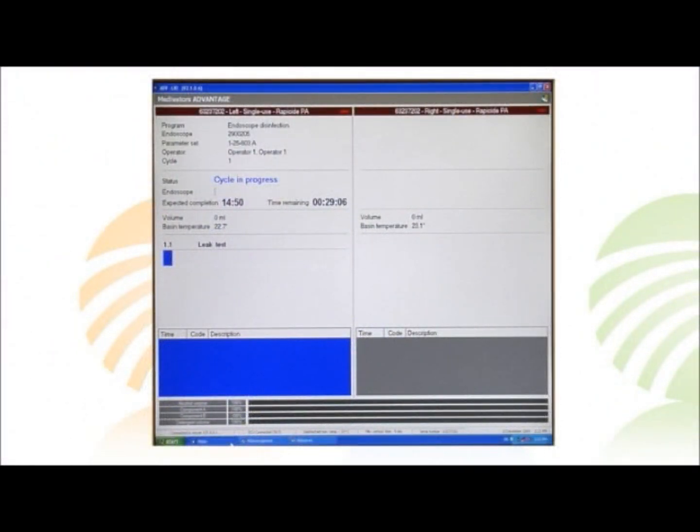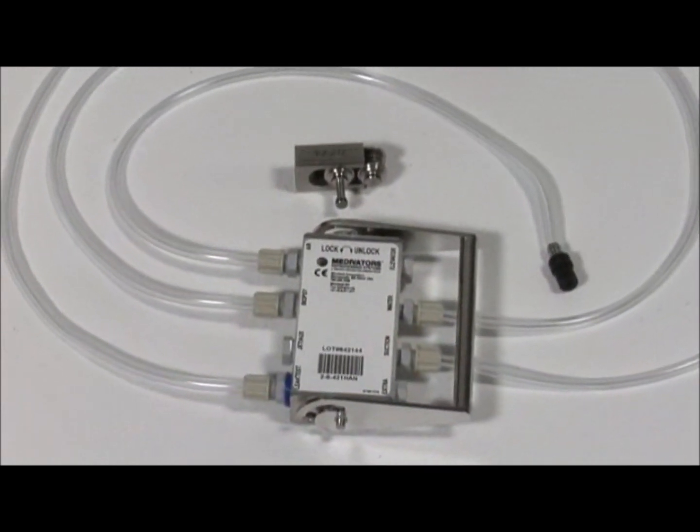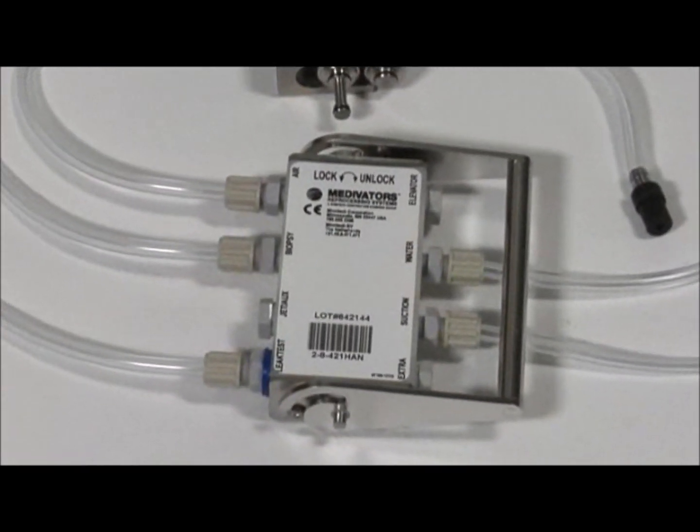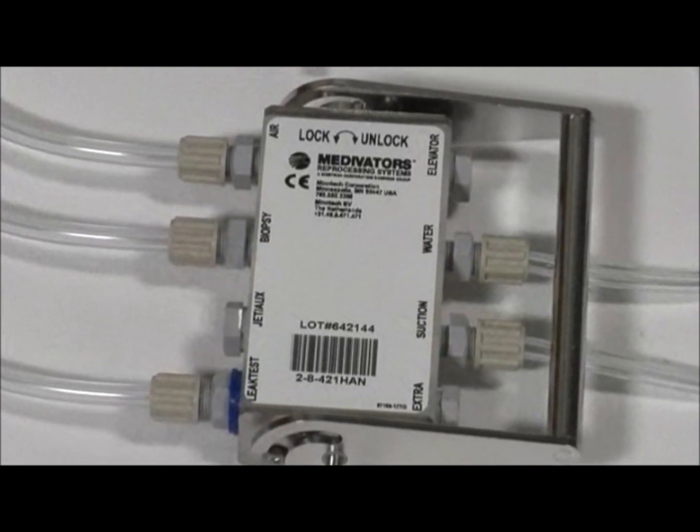The computer system then monitors the channels and can determine if there is a blockage, a leak, or even if a connector pops off. Each endoscope model or family requires a unique hookup block to ensure proper disinfection can be achieved.